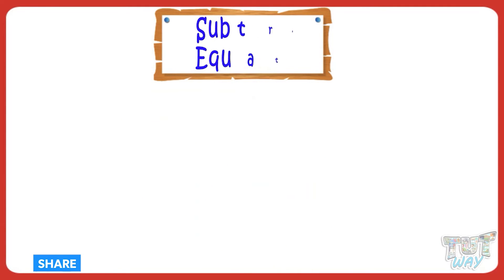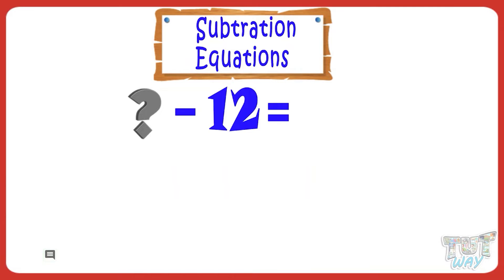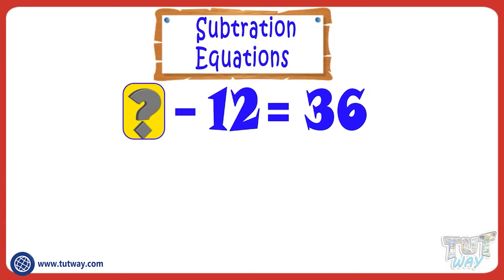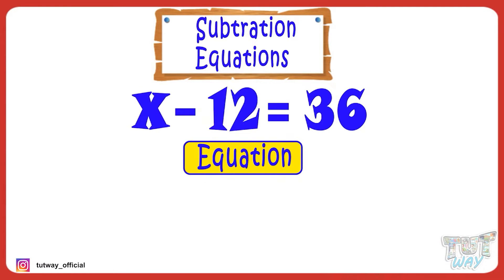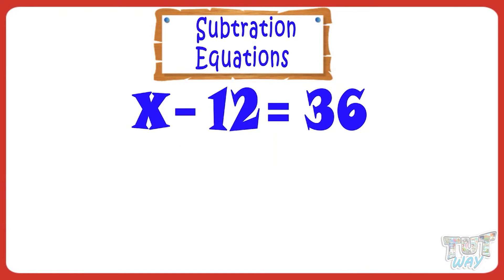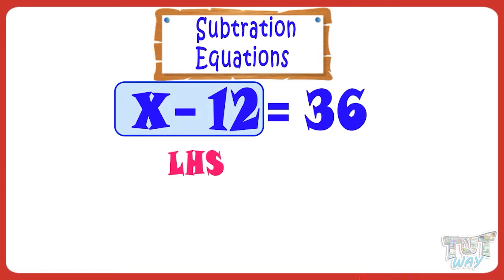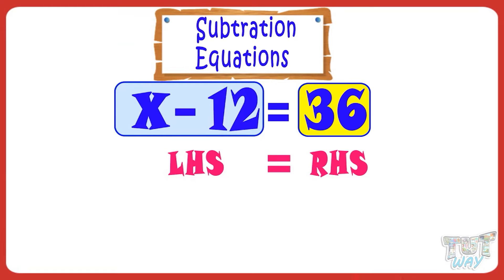Let's take another example — a subtraction equation. If we subtract 12 from a number, it gives 36. Then what is the number? We can write this mathematical question in the form of an equation: X minus 12 equals 36. Here, X minus 12 is LHS, 36 is RHS, and in any equation, LHS must be equal to RHS.